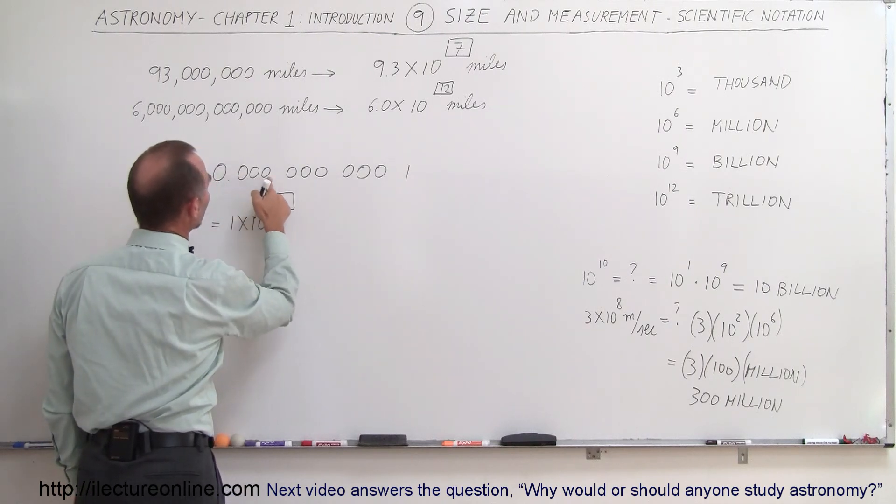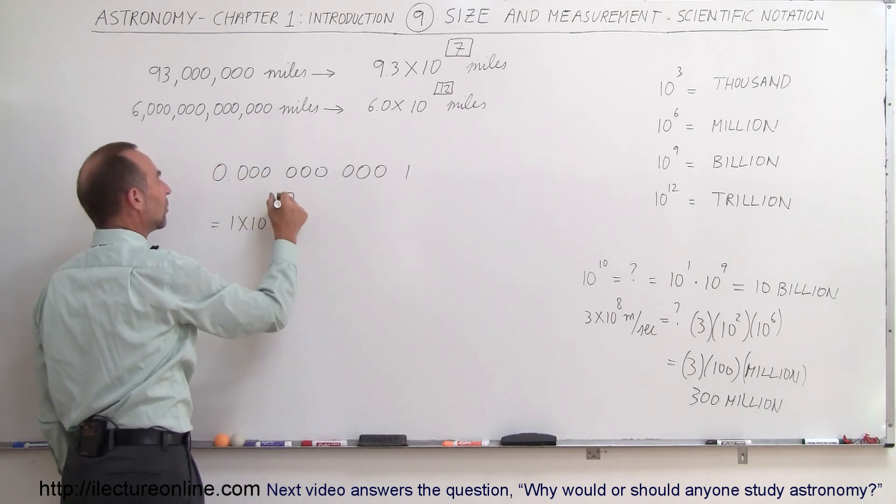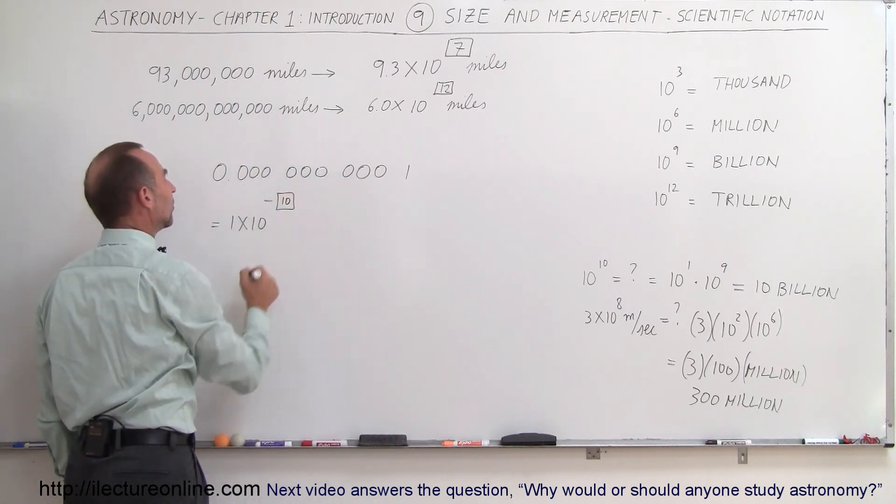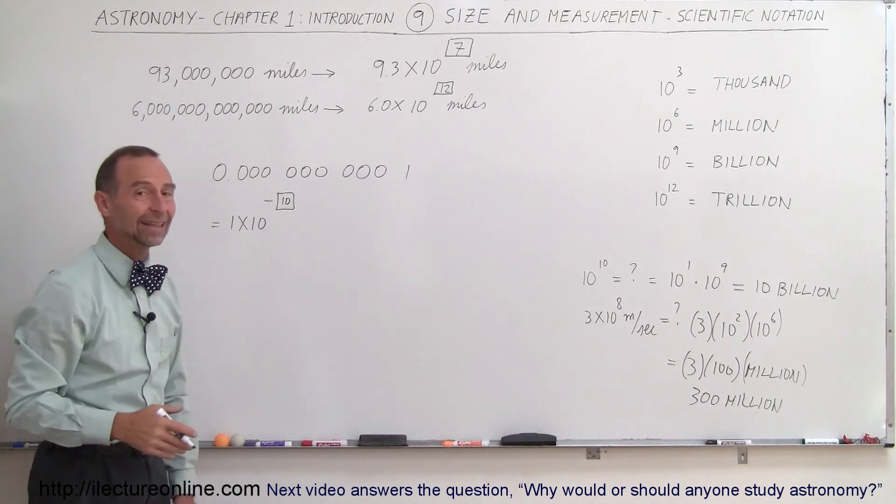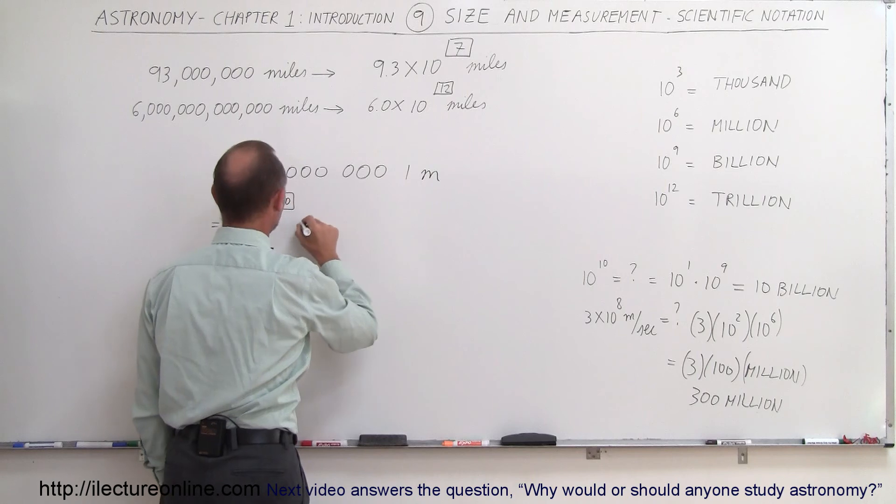So we go from there all the way to the right of the 1. So we go 1, 2, 3, 4, 5, 6, 7, 8, 9, 10. But since it's a very small number, we write minus 10. So that would be 1 times 10 to the minus 10. And that would be in terms of meters if we want to put units on that.